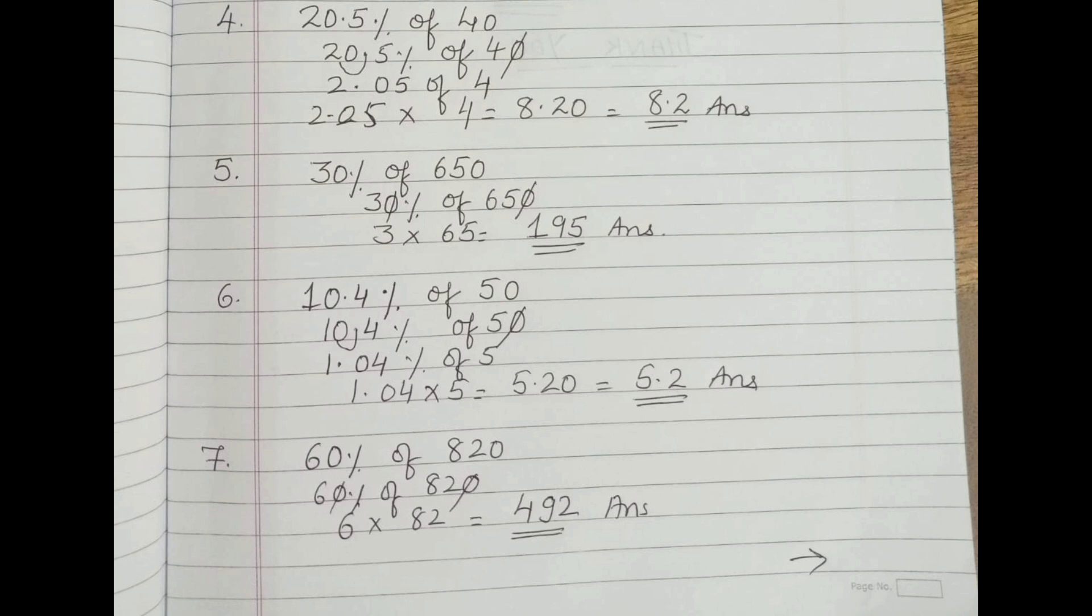The seventh one: 60 percentage of 820. Cut zeros from both sides. You get 6 multiply 82. If you do the multiplication, you get 492.